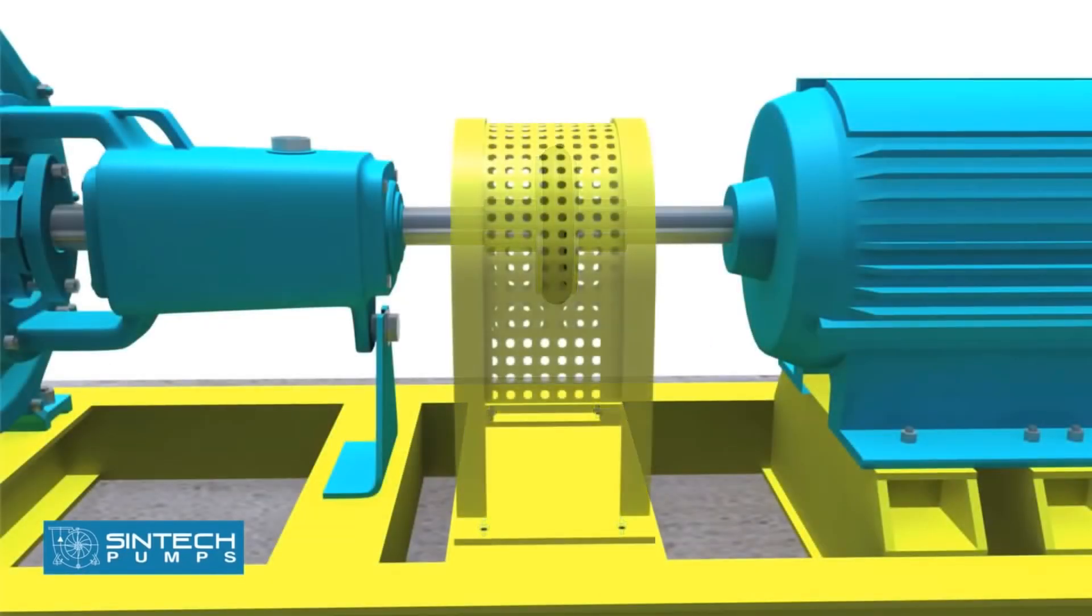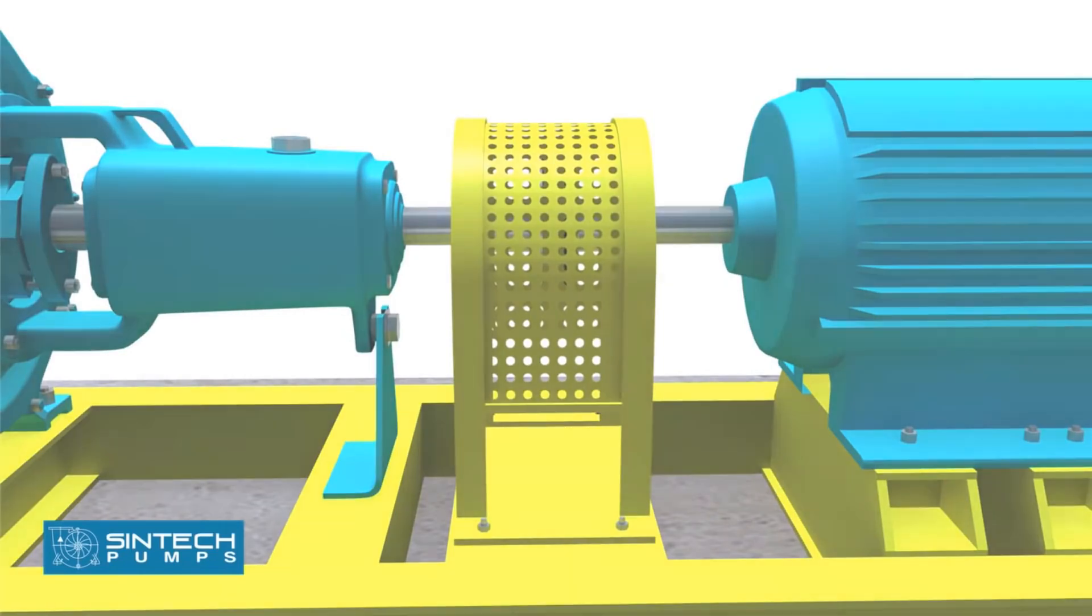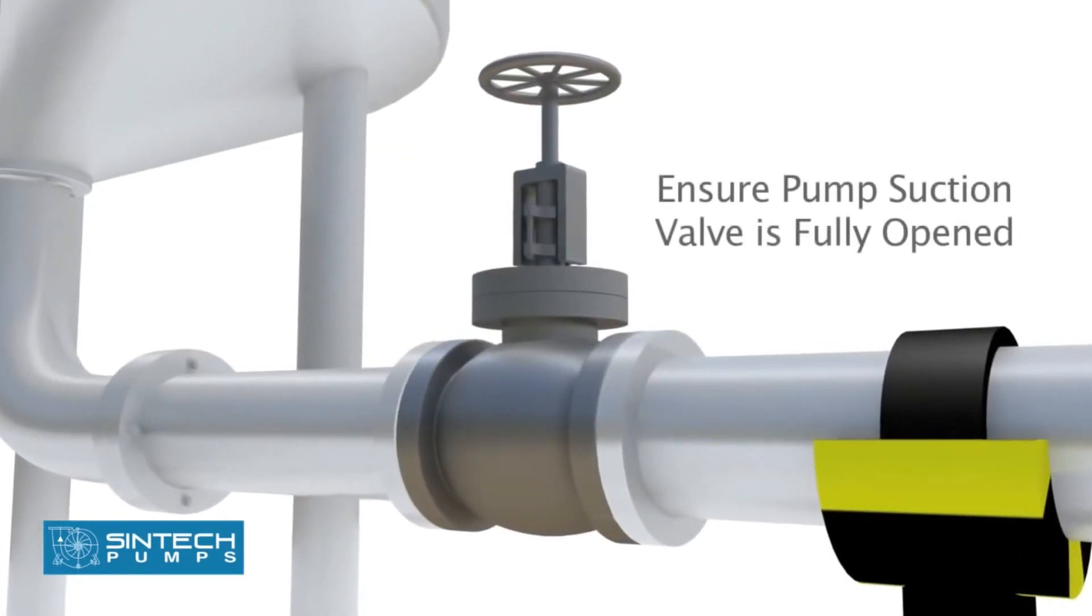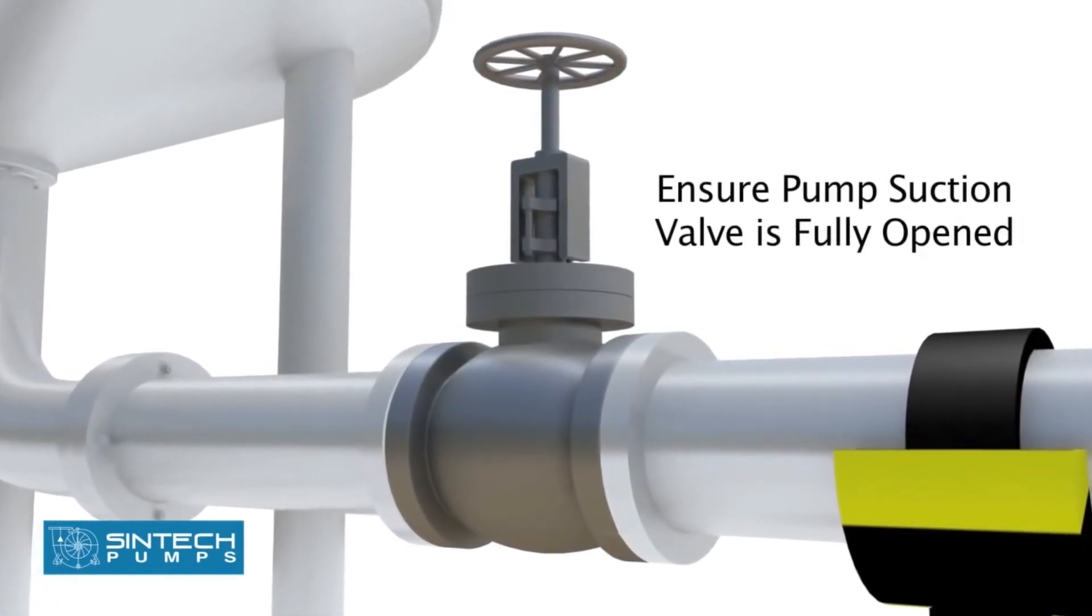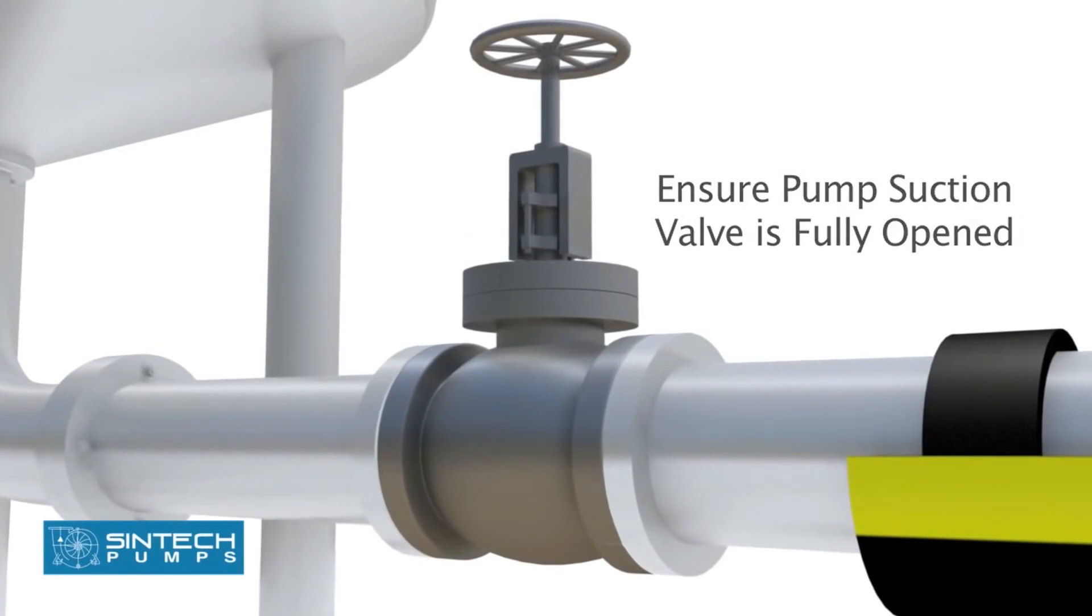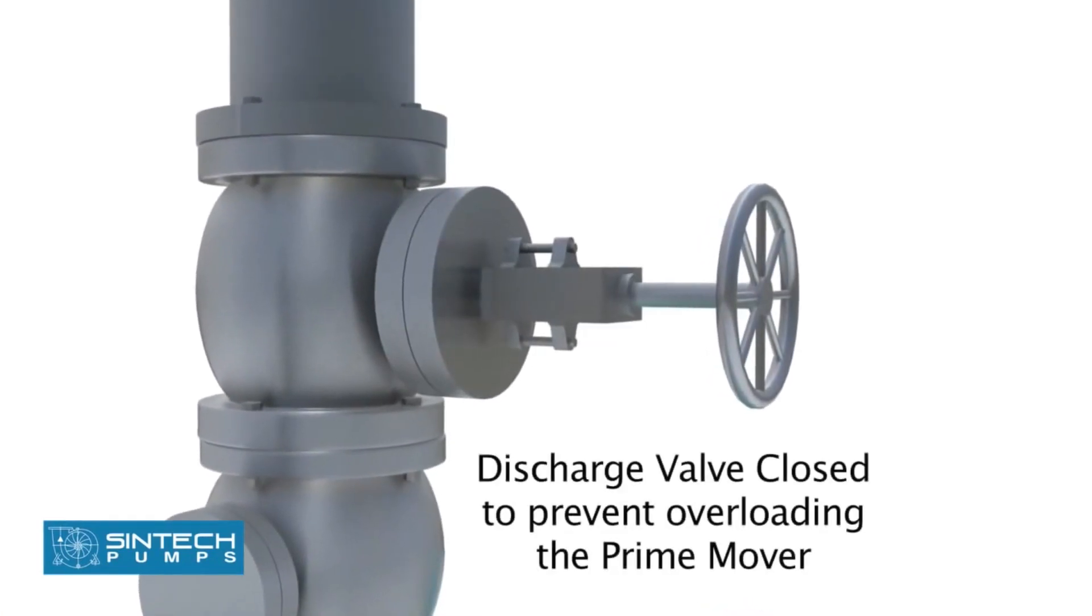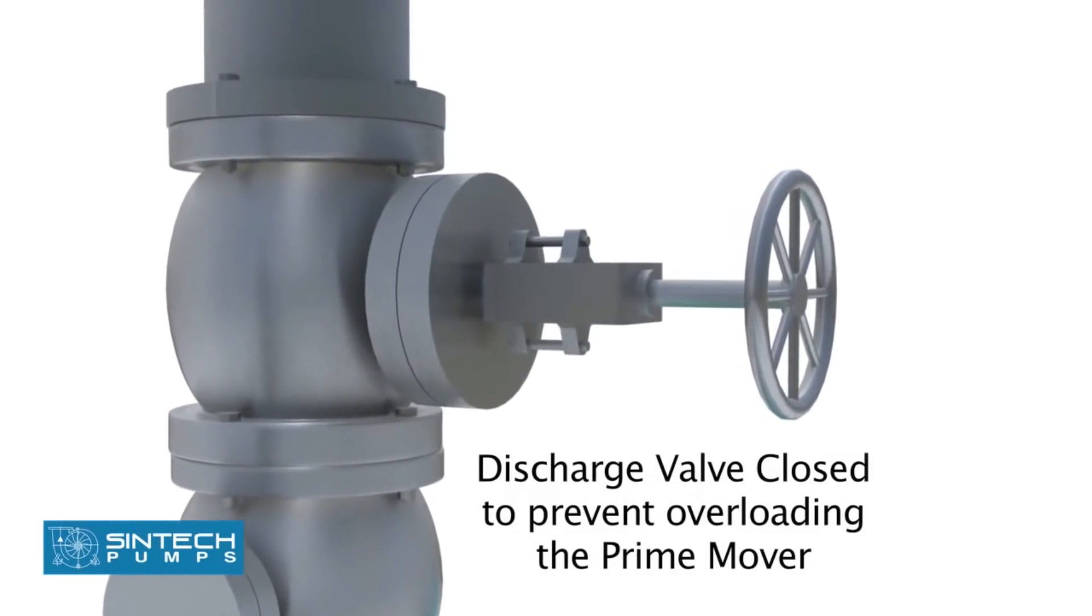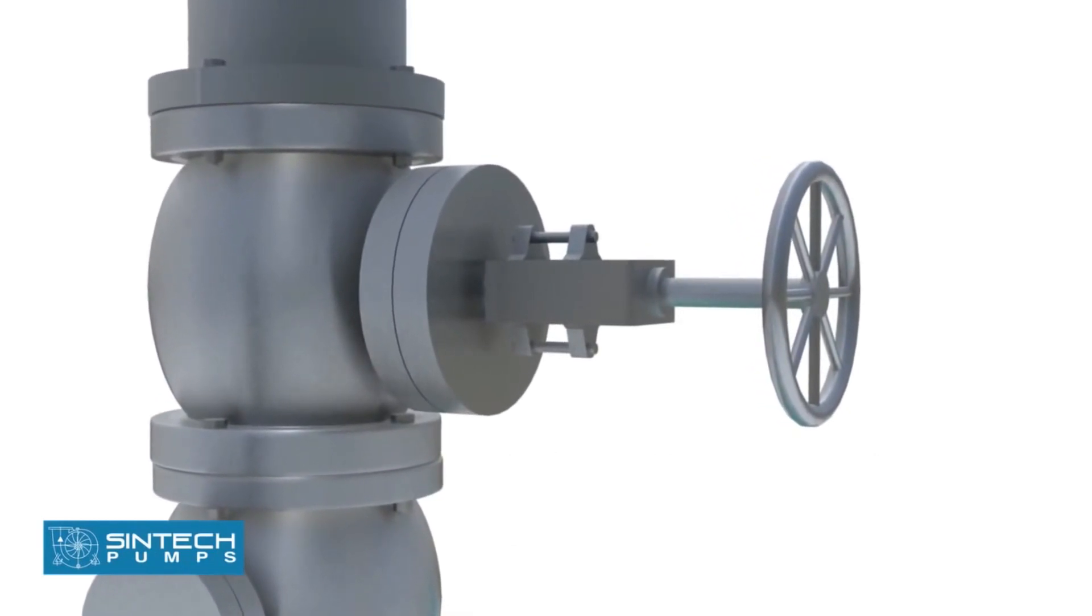Place the coupling guard and tighten the bolts. Ensure that pump suction valve is fully opened and all joints are checked for any leakage. The opening of discharge valve is kept closed as this prevents overloading the prime mover.